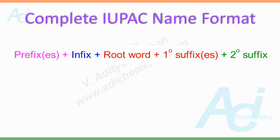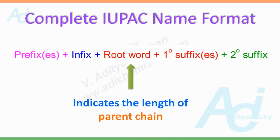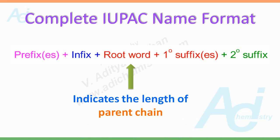While giving an IUPAC name to an organic compound, we should always start with choosing a correct root word which indicates the length of the parent chain. First of all, we have to choose a parent chain in the given organic compound.